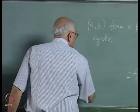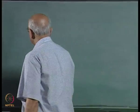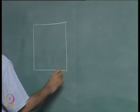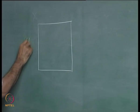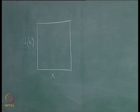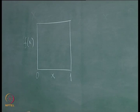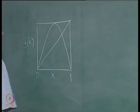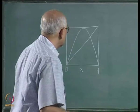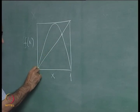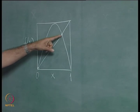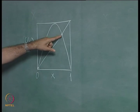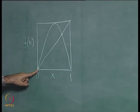Now let us draw a picture. We specialize to the unit interval and plot f(x) versus x, with f(x) also taking values in the unit interval. Take a typical function — a single-humped function like a symmetric parabola — with the bisector drawn. There are fixed points where the function crosses the bisector. At both of these crossings the slope magnitude equals 1, so they are unstable fixed points.